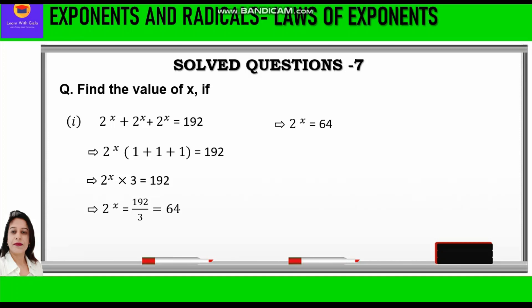So 2 raised to power x is equal to 192 upon 3, which is equal to 64. We shall write 2 raised to power x is equal to 2 raised to power 6. When the bases are same we can equate the powers, so x is equal to 6.